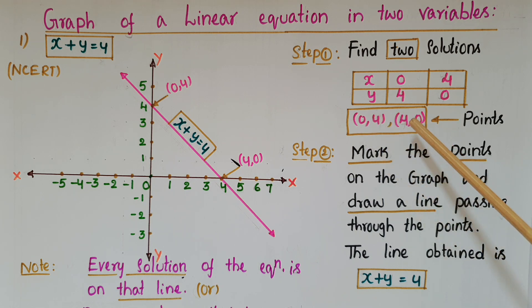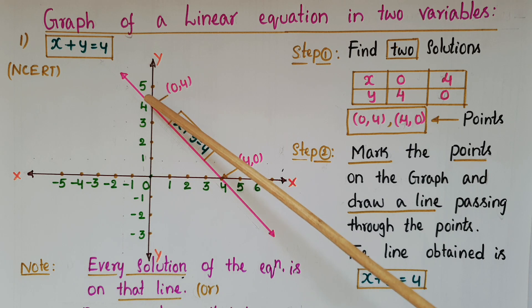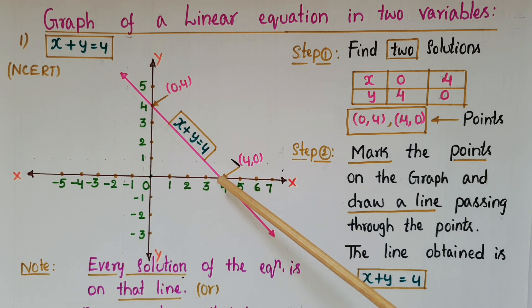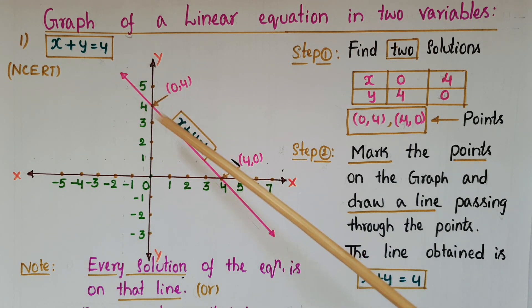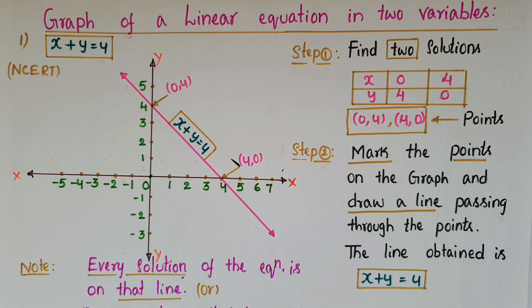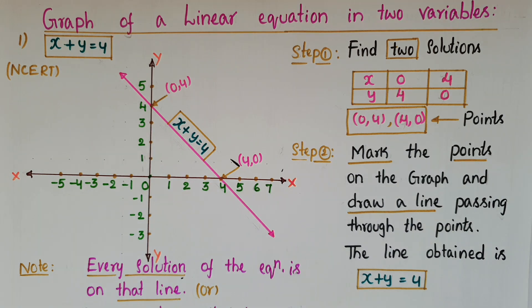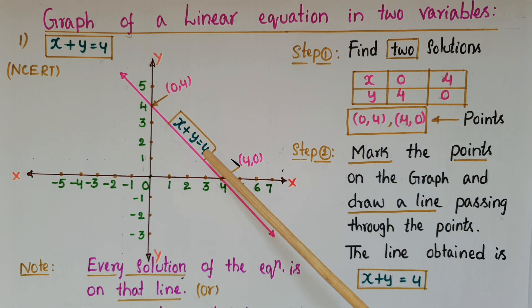We can mark these two points on the graph. First, mark (0, 4) here, and next (4, 0) here. Then join these two points and you will get a line. The line obtained here represents x plus y is equal to 4.